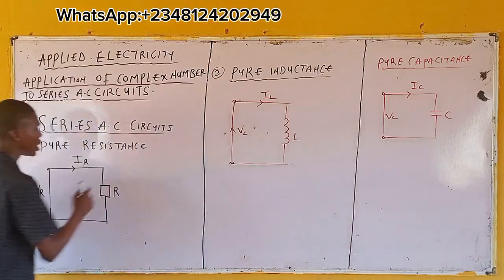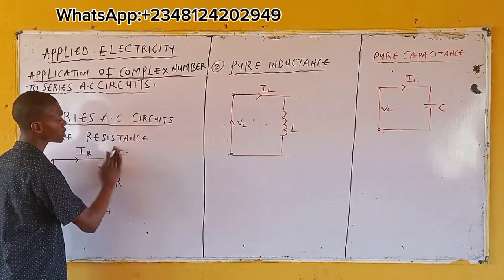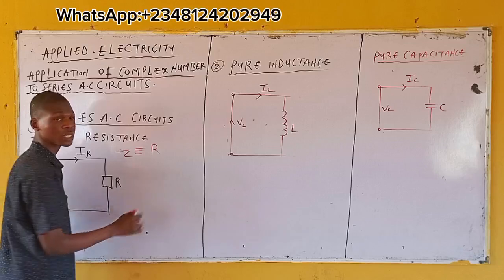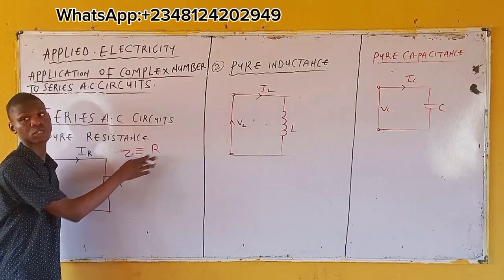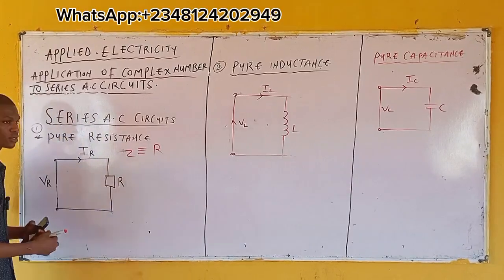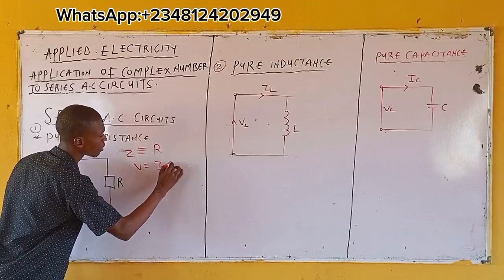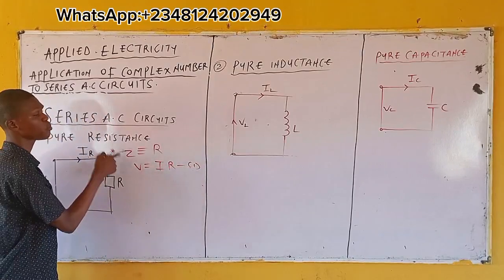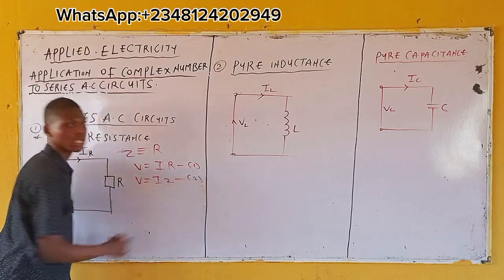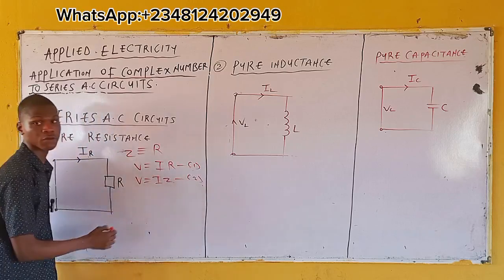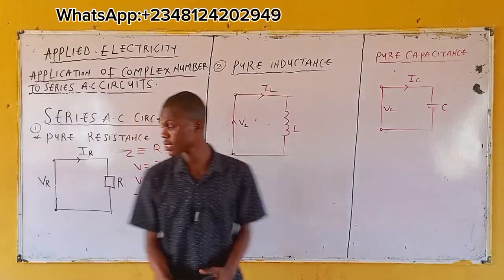For this first case, you have impedance, and the impedance is equivalent to resistance. To get the impedance by formula, we call from Ohm's Law: V equals IR — call this equation one. Since impedance is equivalent to R, equation one becomes V equals IZ — call this equation two. Making Z the subject gives Z equals V over I — call this equation three.